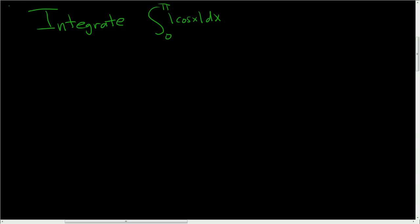Okay, we're being asked to integrate the absolute value of cosine x from 0 to pi. So I haven't done this problem in a while, so this should be fun. So solution.